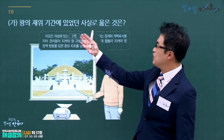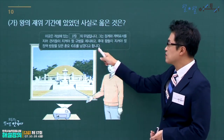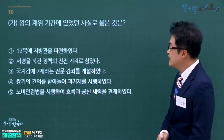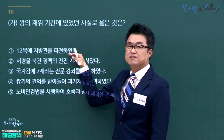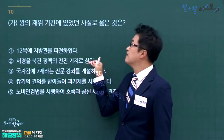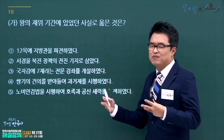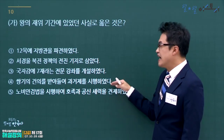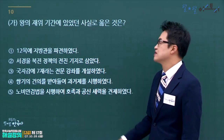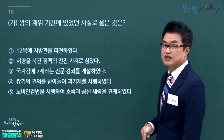고려 개성을 배경으로 정계·개백요소·훈요십조를 남긴 왕은 태조 왕건입니다. 태조 왕건 재위기간에 있었던 사실을 고릅니다. 12목 지방관 파견은 성종, 국자감 칠재 설치는 예종, 쌍기의 건의로 과거제 실시는 광종, 노비안검법은 광종입니다. 태조 왕건과 북진정책이 연결되어 정답은 2번입니다.